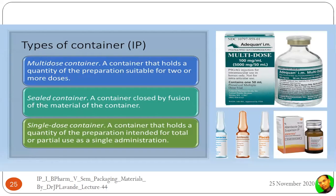A sealed container is one closed by fusion of the container material — for example, vials with aluminium caps crimped at their neck which must be broken first. Single dose containers are associated with ampoules, or with most pediatric formulations like Zentel (albendazole) suspension, where the dose contains only a single use and any excess quantity must be discarded and should not be administered.